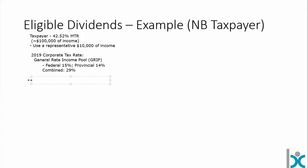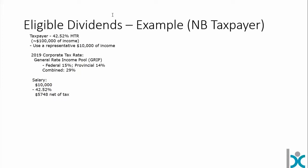If this person takes salary, the math here is simple. Let's say they take that $10,000 all as salary — we would knock off 42.52% of that, which would leave this taxpayer with $5,748 net of tax. So that's if this corporation has income taxed at the general rate of 29%, and the salary amount would be $5,748.